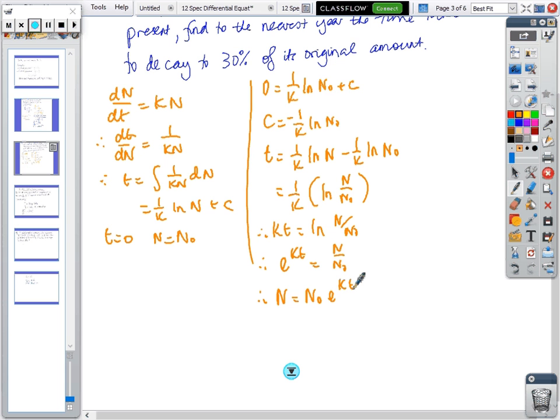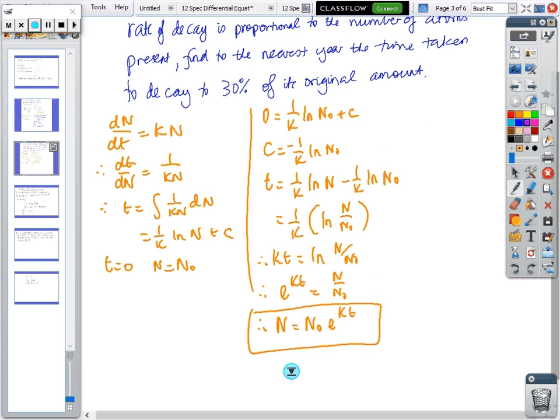Therefore e^(kt) equals n/n_0, and n equals n_0 e^(kt). In fact, all growth and decay questions end up being that form at the end of the day.